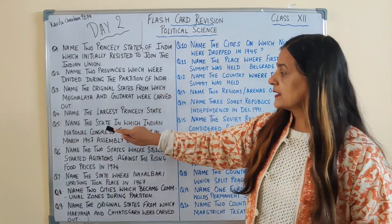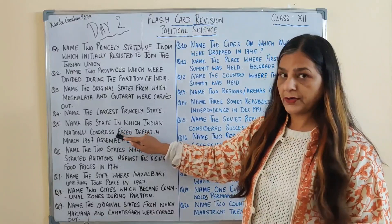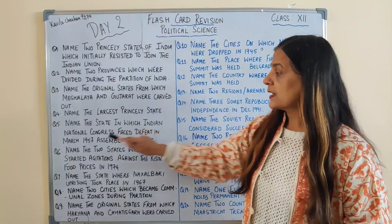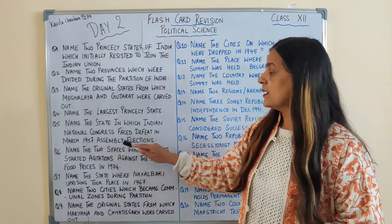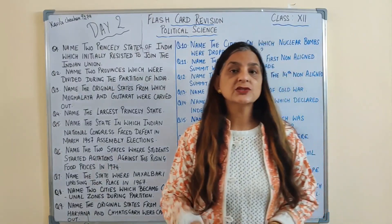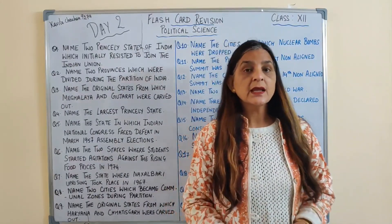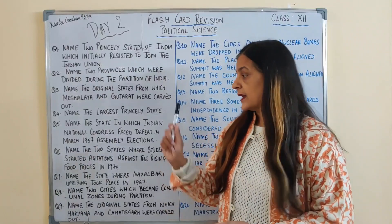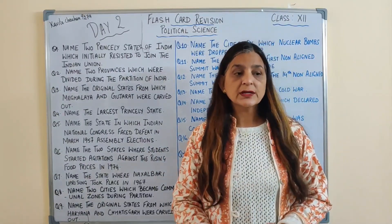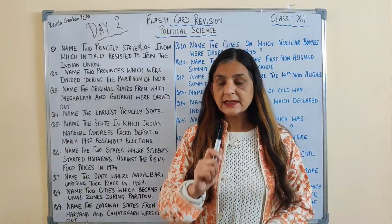Next question: name the state in which Indian National Congress faced defeat in the March 1957 assembly elections. Kaunsi state thi jisme Indian National Congress ne assembly elections mein 1957 mein haar hui thi Congress ki, and the answer is Kerala.